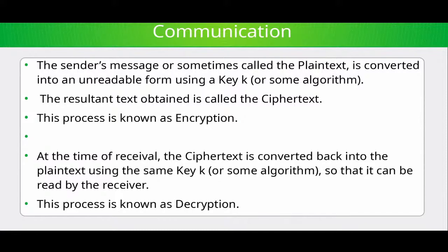The entire process of transforming plaintext into ciphertext using a key is known as encryption. At the receiver's end, the ciphertext is converted back into plaintext using the same key or algorithm so that it can be read. This backward conversion from ciphertext to plaintext is called decryption.